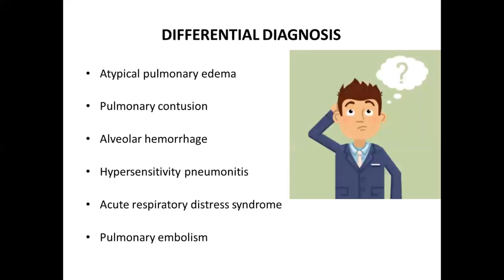If the patient presents with all these symptoms, you should formulate a differential diagnosis which may include atypical pulmonary edema, pulmonary contusion, alveolar hemorrhage, hypersensitivity pneumonitis, acute respiratory distress syndrome, or pulmonary embolism.